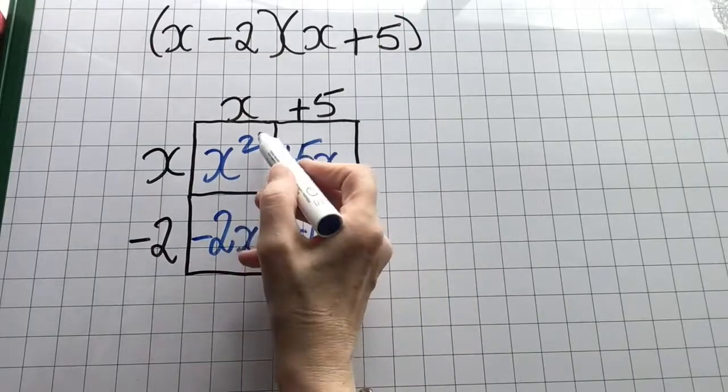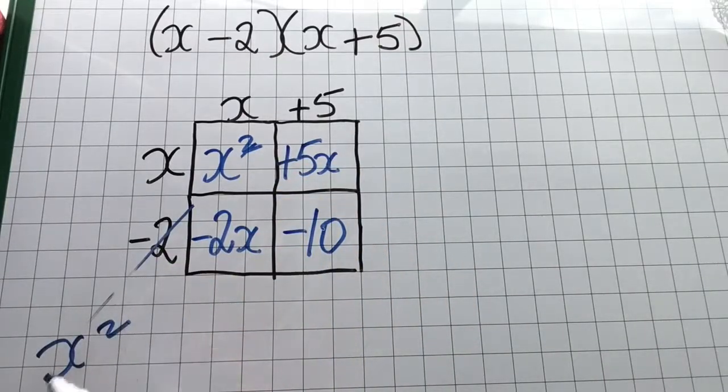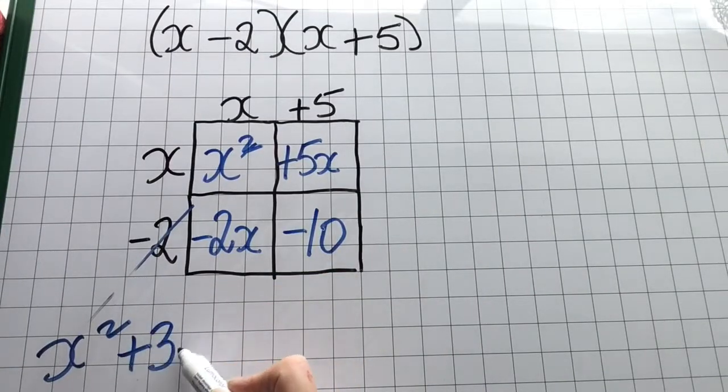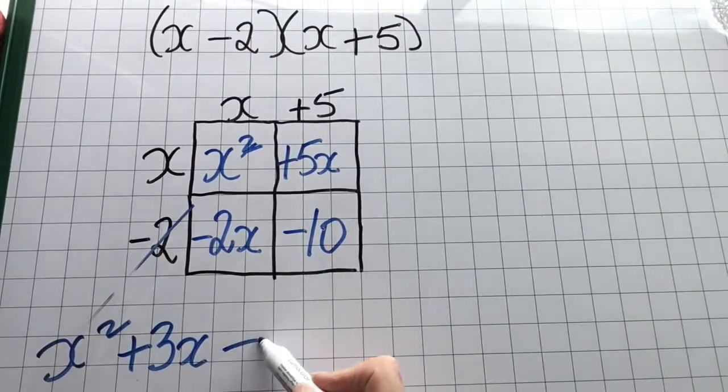Now I'm going to simplify. Add up like with like. x squared, plus 5x minus 2x is plus 3x, and minus 10.